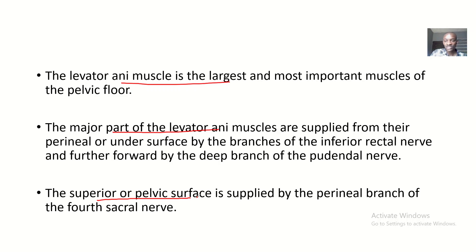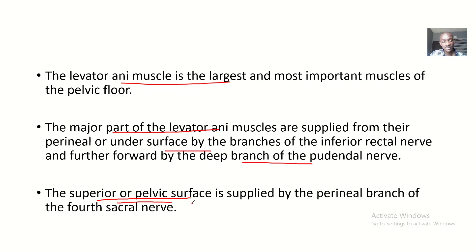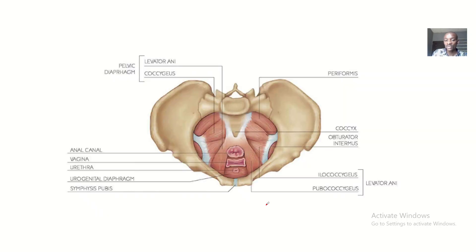The superior or pelvic surface is supplied by the perineal branch of the fourth sacral nerve. So in summary: the under surface is supplied by the inferior rectal nerve, forward by the deep branch of the pudendal nerve, and superiorly the pelvic surface is supplied by the perineal branch of the fourth sacral nerve.